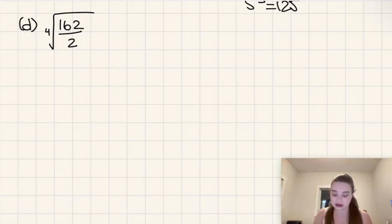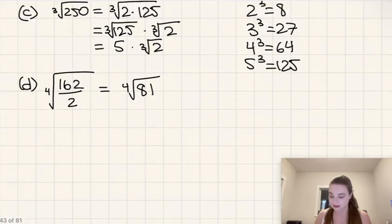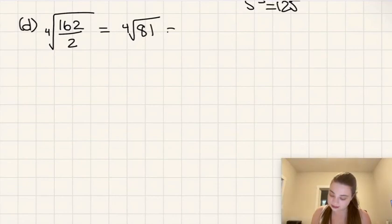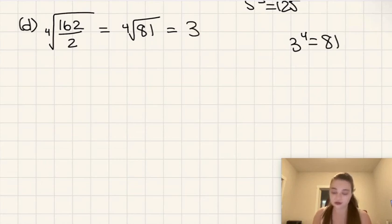So the other thing we could do here is we could just say, oh well, that's 81 and take the quarter root of 81. And the quarter root of 81, well, 81 is actually a perfect quarter root, right? Because 3 to the power of 4 is equal to 81. And so this is just equal to 3.